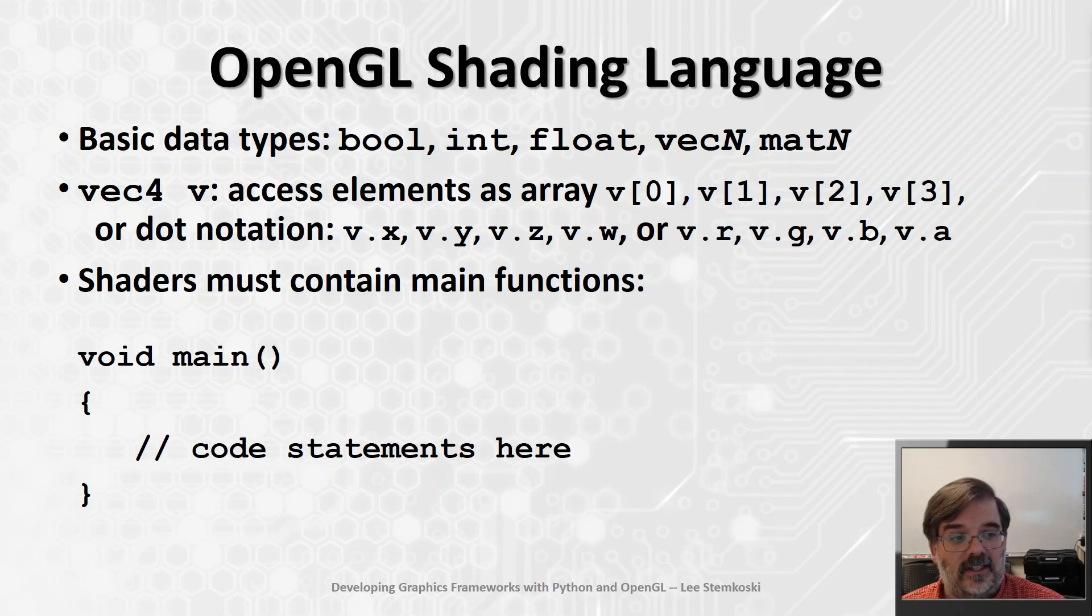But unlike Python, variables in GLSL must be declared with an assigned type. The end of each statement must be indicated by a semicolon, statements are grouped using braces rather than indentation, and comments use a double slash rather than a shift 3, a grid symbol. Functions also must specify their types of input parameters and return values. So it is much more similar to C or C++ or Java rather than Python, and the details will become apparent as we go through a series of examples.